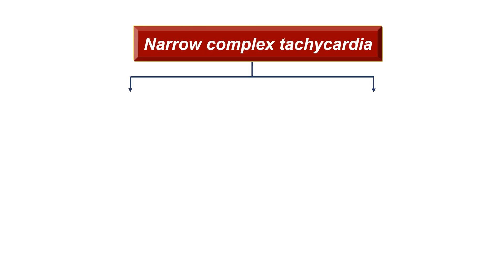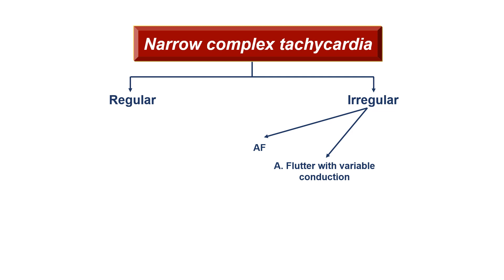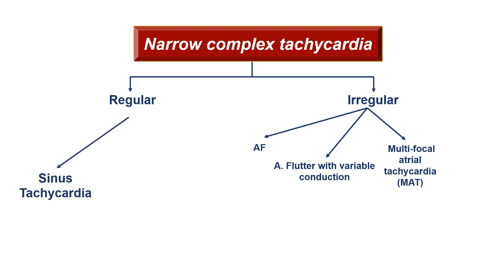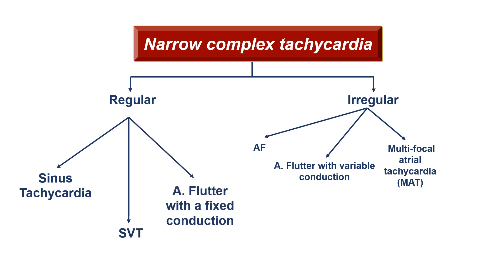This is a really important differential diagnosis that you need to know by heart. When we talk about narrow complex tachycardia, you should split them into two big groups: regular and irregular. The irregular ones are three: AF, atrial flutter with variable conduction, or multifocal atrial tachycardia. The regular ones are also three: sinus tachycardia, SVT, or atrial flutter with a fixed block. These are the six differentials for narrow complex tachycardia. Considering that we are dealing with a regular rhythm today, our differential is sinus tachy, SVT, or atrial flutter with a fixed conduction.